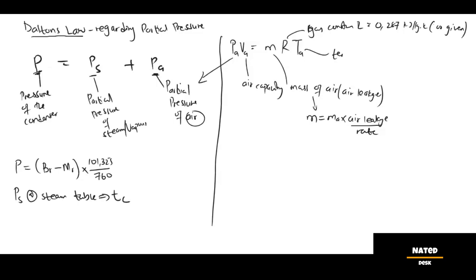Condensate temperature TC is the same as the temperature of air TA, but TA must be in Kelvin, so add 273.